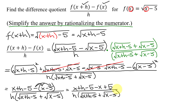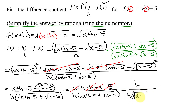Notice in the numerator I have x minus x, which adds up to 0, and negative 5 plus 5, which also adds up to 0. So the only thing left in the numerator is h. That is divided by h times the square root of x+h minus 5 plus the square root of x minus 5. The h can now be cancelled.